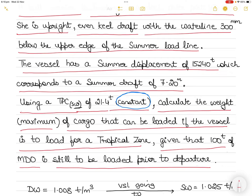The word 'constant' means that although the TPC given is for sea water at 21.4 tons, the TPC will remain the same irrespective of the density of the water. I will show you during the question what you could have done to change the TPC from salt water to dock water if the word 'constant' was not given.